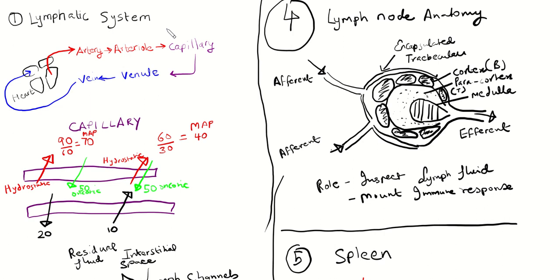Then of course we have the secondary lymphoid organs. This is where the lymphocytes circulate. You have the lymph channels and the lymph nodes, and then you have the spleen. Let's review them more closely to gain a better understanding of what they are.